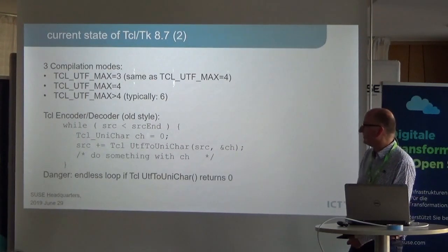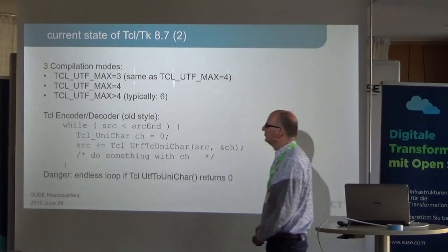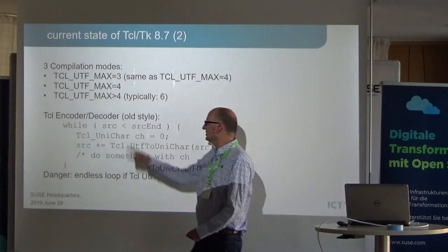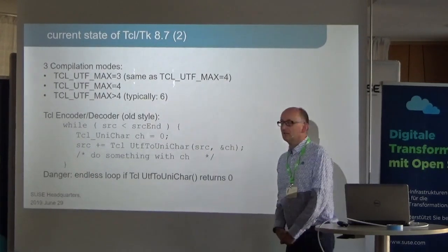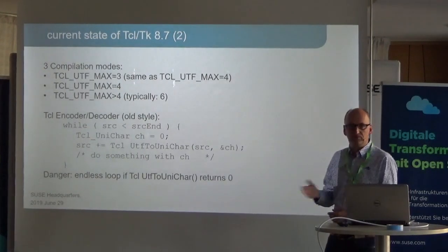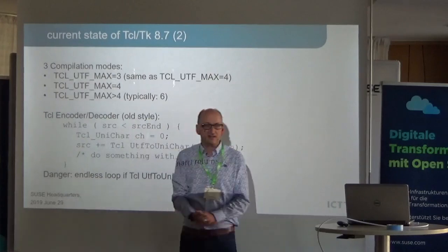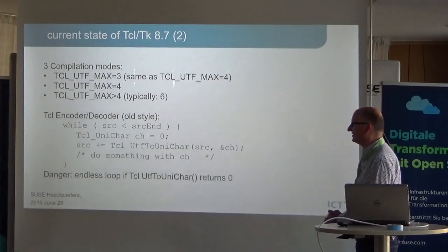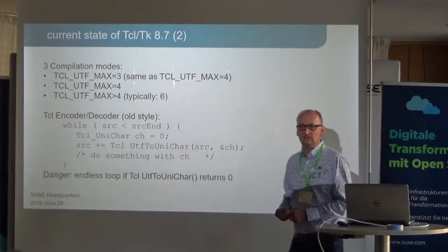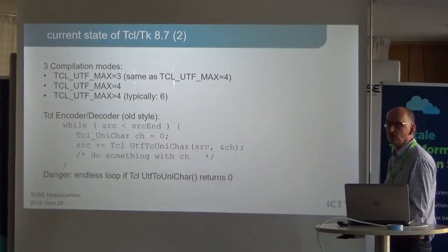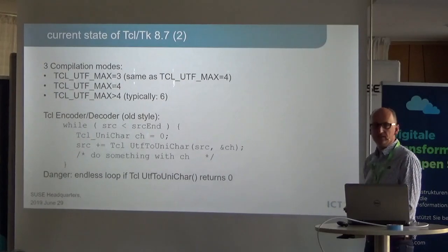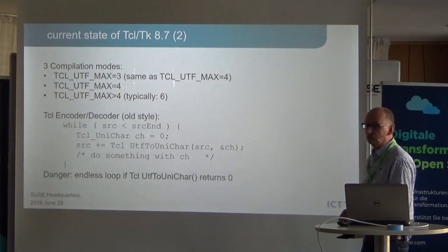At the moment in Tcl 8.7 there are three compilation modes: you can compile with TCL_UTF_MAX as 3, 4, or bigger than 4 — typically 6. At the moment all operation with UTF_MAX=3 acts like it was in 8.6 — it's stripped off, it's actually the same as 4. If you compile with UTF_MAX=3 it will just handle everything. You might ask, don't we get buffer overflows? No, and I'll tell you why.